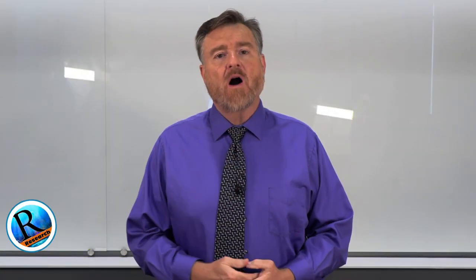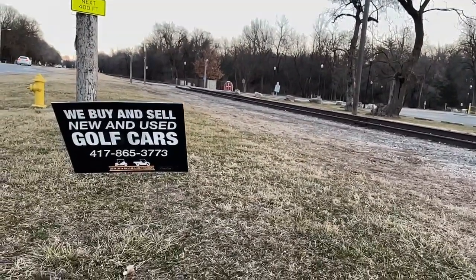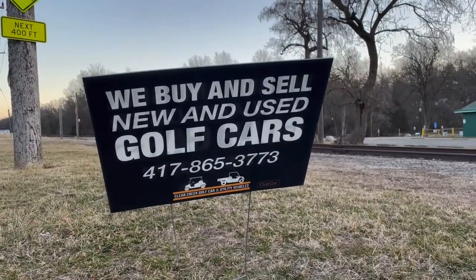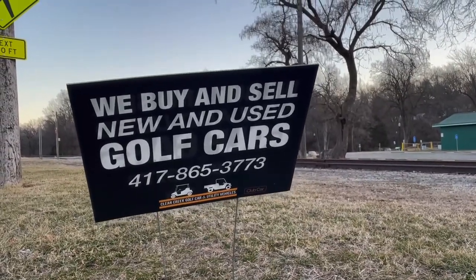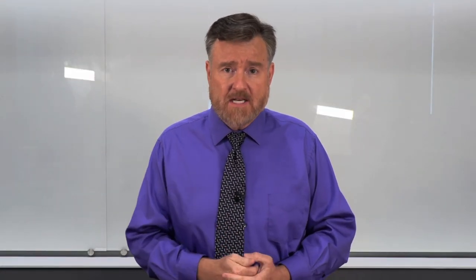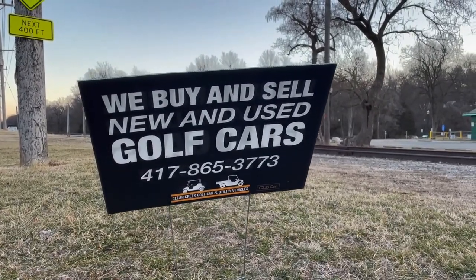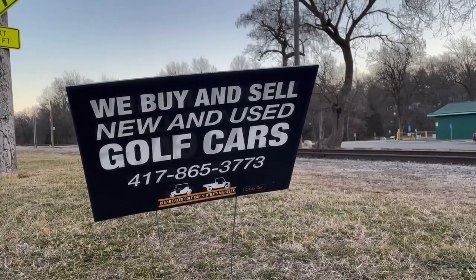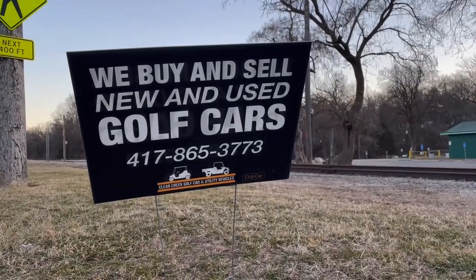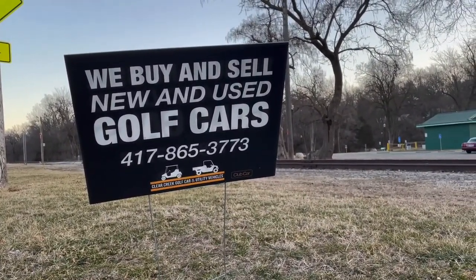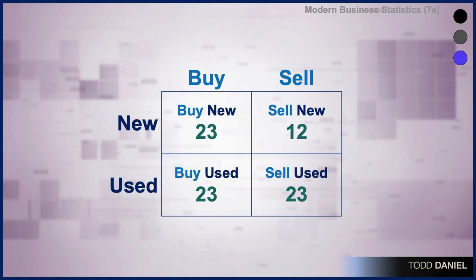Earlier this year I was getting some exercise walking down at the park and I encountered a sign which advertised that we buy and sell new and used golf carts. My statistics brain immediately concluded we could cross tabulate that data. There are two variables represented on this sign: one is buy and sell, the other is new and used. Those two variables can be combined in a table to give us a count of how many of each are bought and sold. There is a weakness to this example in that we don't really have a good set of counts for these data.